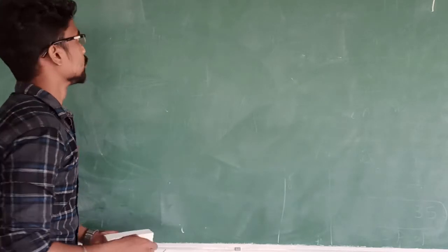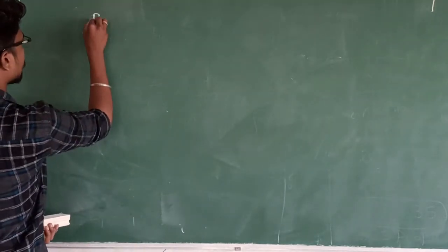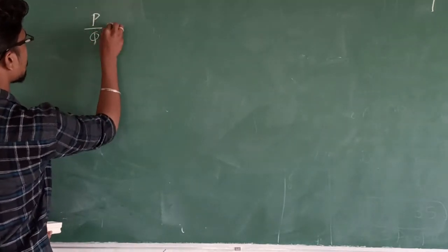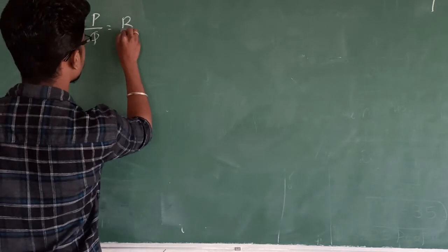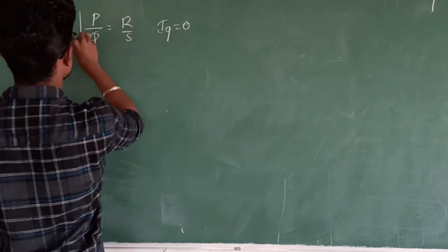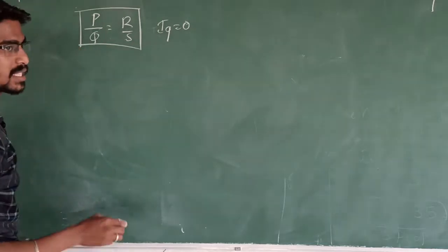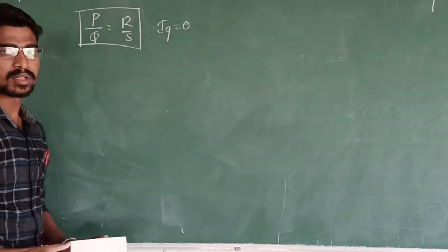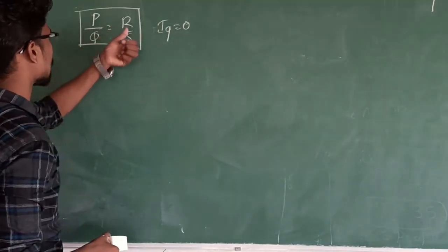We derived the expression for the balanced condition of the Wheatstone bridge — when current I is equal to 0. This is the balanced condition for the Wheatstone bridge using Kirchhoff's rules: P by Q is equal to R by S.